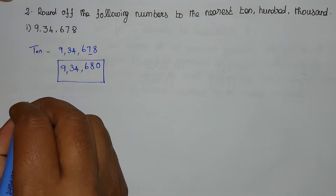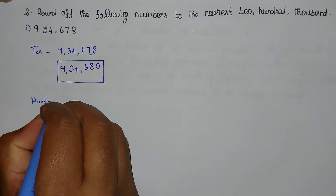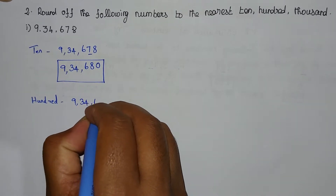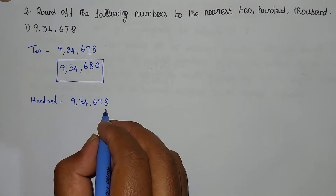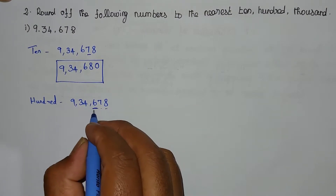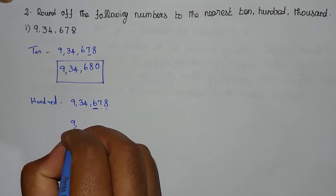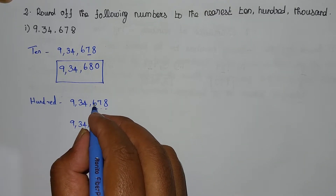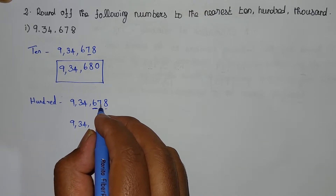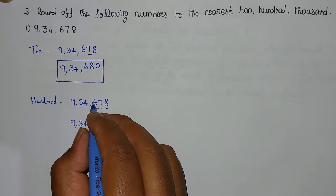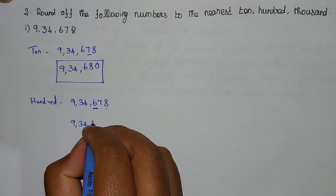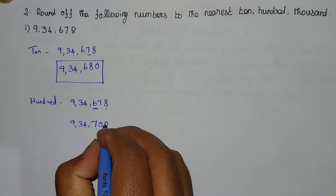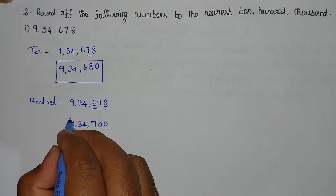Now rounding 9,34,678 to the nearest 100. The 100s position digit is 6. The right-hand side value is 7, which is greater than 5. So 6 plus 1 equals 7. The two digits to the right become 0, 0. The answer is 9,34,700.